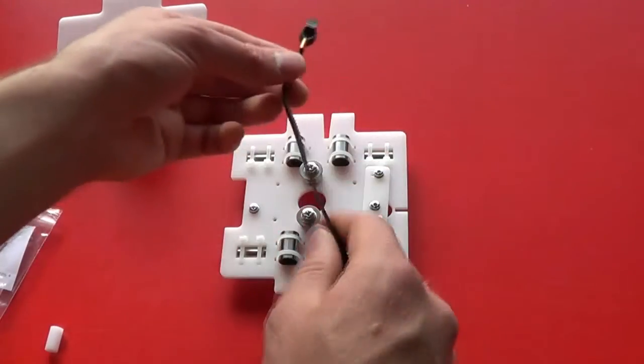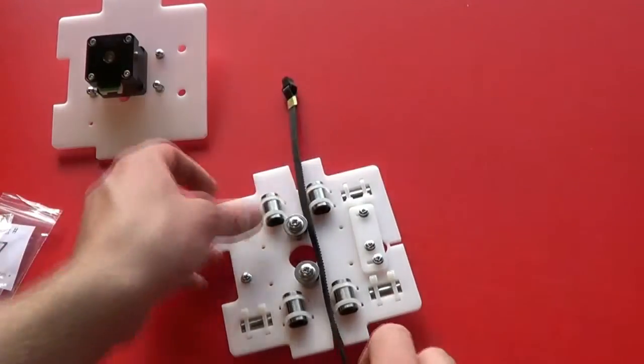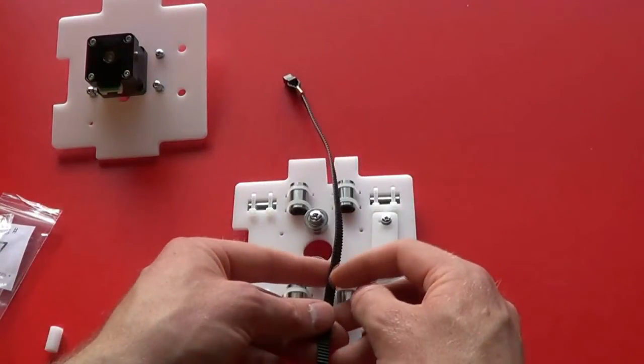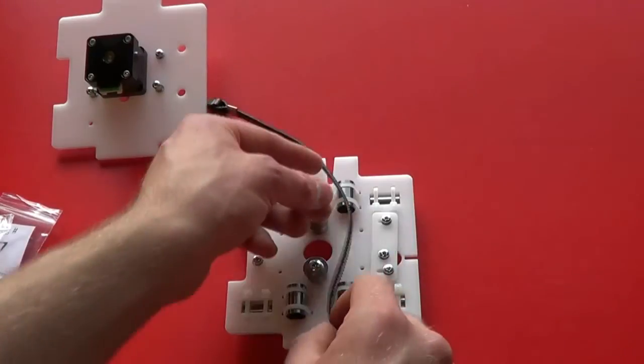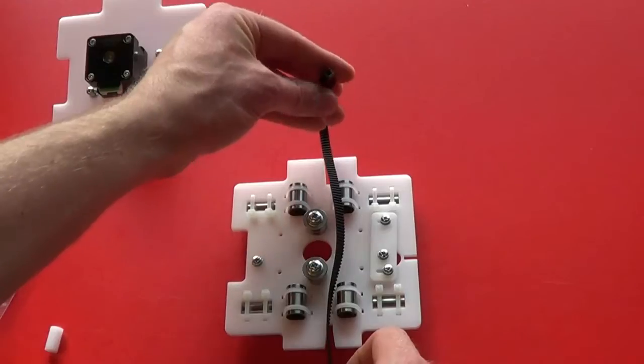The Y belt needs to be placed on top of the bottom carriage plate with the teeth of the belt pointing towards the right and the black plastic connector towards the rear.